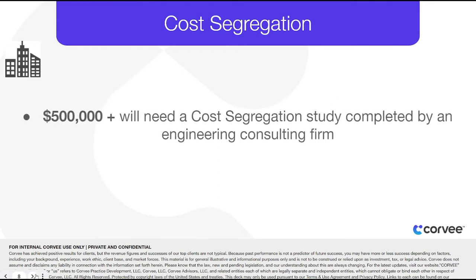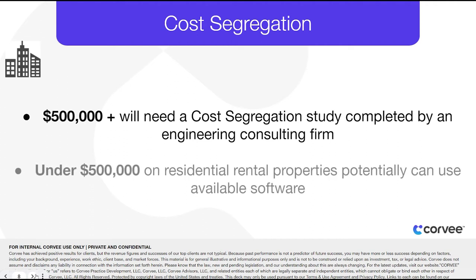Properties with values greater than $500,000 will need a cost segregation study completed by an engineering consulting firm that specializes in preparing the studies. Software may be available for cost segregation studies on residential rental properties valued at $500,000 or less.